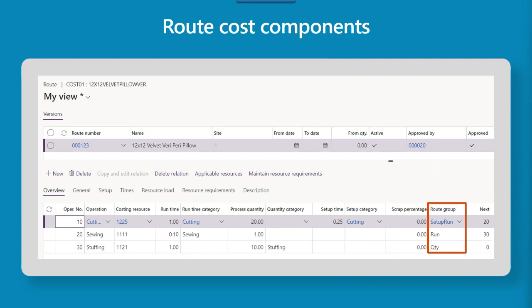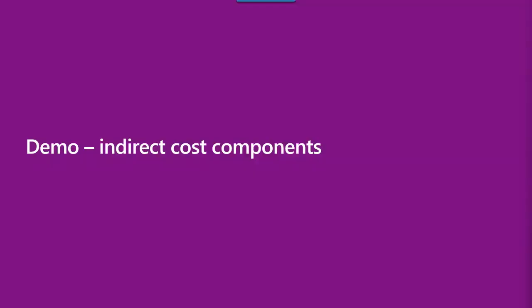Sometimes companies choose not to set up routes for labor costs and instead use a service item on the BOM to allocate labor costs to the production order. This is not a best practice for manufacturing costing, as it does not give you the same control over labor cost calculations, actual tracking, variance analysis, or indirect cost calculations. Let's switch over to the system and take a closer look at the setup for indirect costs in the costing sheet.